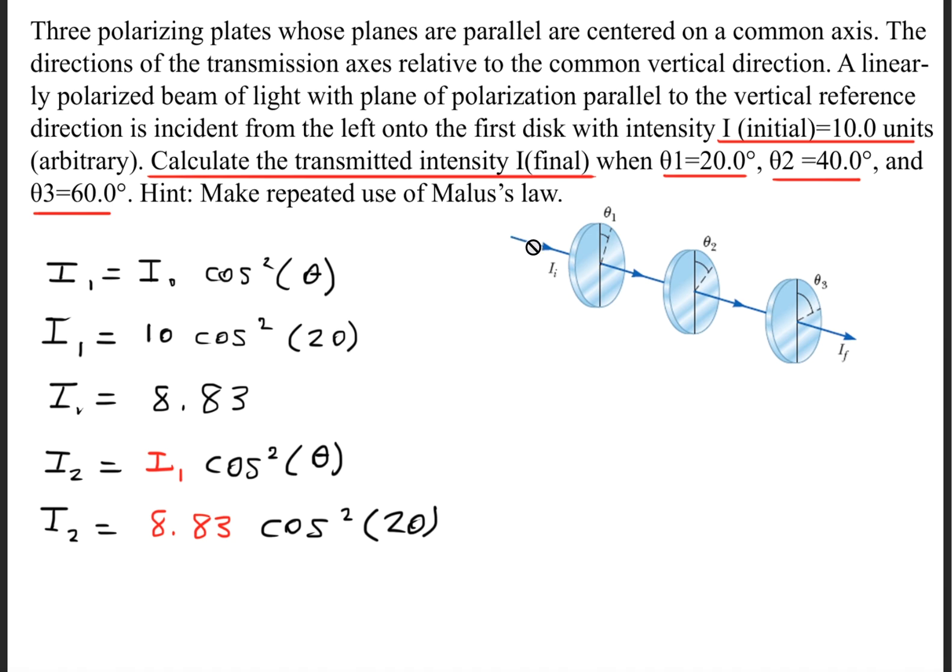we'll have unpolarized light coming in through this polarizer. This polarizer is 20 degrees, but when it comes through this one, this is 40 degrees from this line right here, but it's actually only 20 degrees relative to this first polarizer, so we're going to use 20 degrees for our theta.